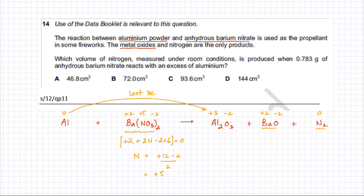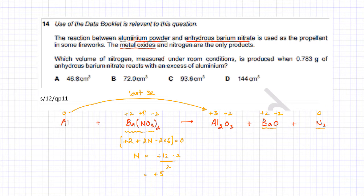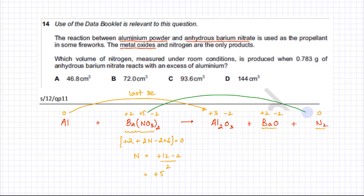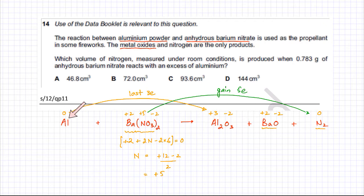Looking at all the oxidation states: barium maintains its oxidation state, oxygen is also −2 on both sides and not changing. The only element apart from aluminium that's changing its oxidation state is nitrogen. It was +5 in barium nitrate and it is 0 in the nitrogen molecule, which means it is gaining 5 electrons and getting reduced. So aluminium lost 3 electrons and nitrogen is the species gaining a total of 5 electrons.